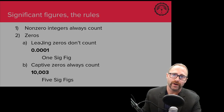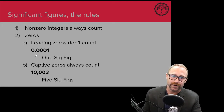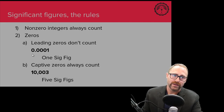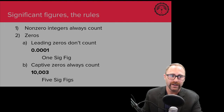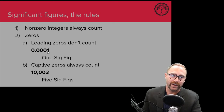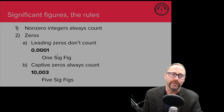Zeros are where things get a little more complicated. The first classification is called a leading zero. The zero in the ones, tenths, hundredths, thousandths places are basically placeholder zeros — we know that we don't have anything measured in any of those places. It's a leading zero in front of a non-zero integer value. This number, even though it has five digits in it, only has one significant figure, and that one significant figure is the one itself.